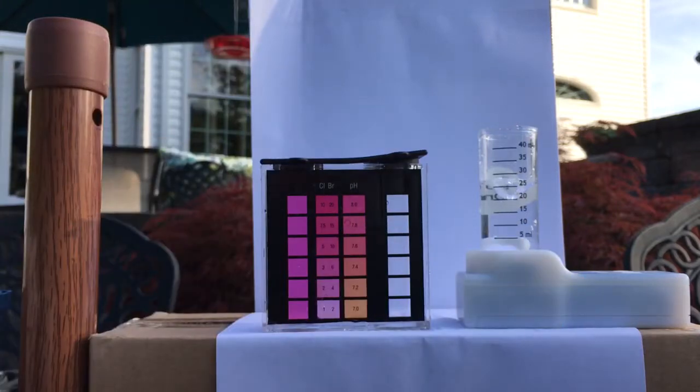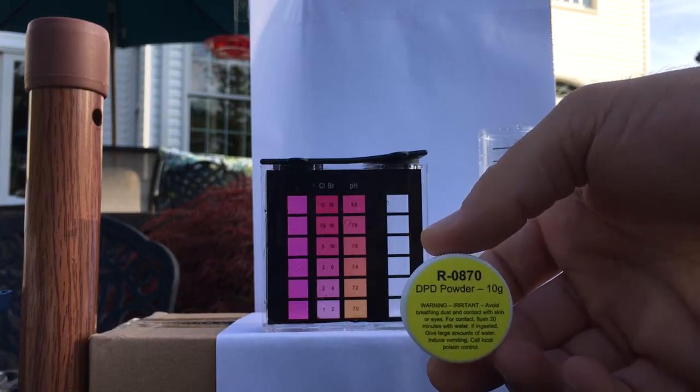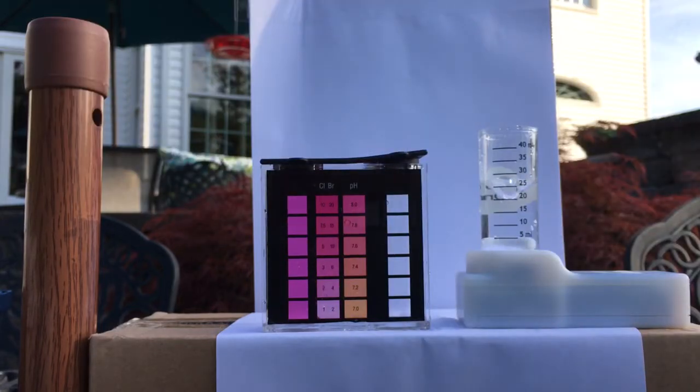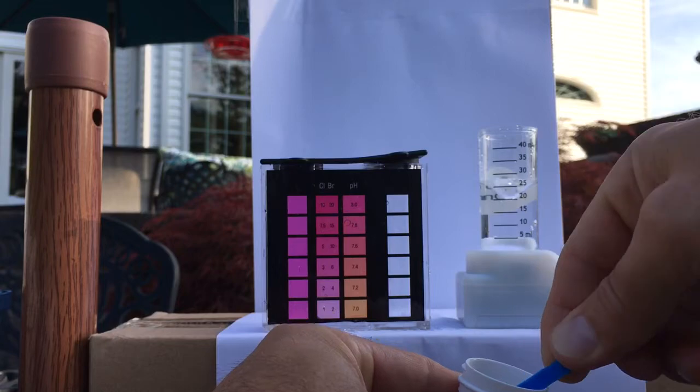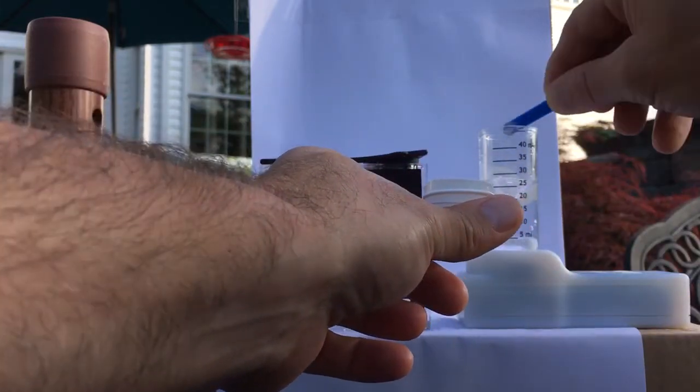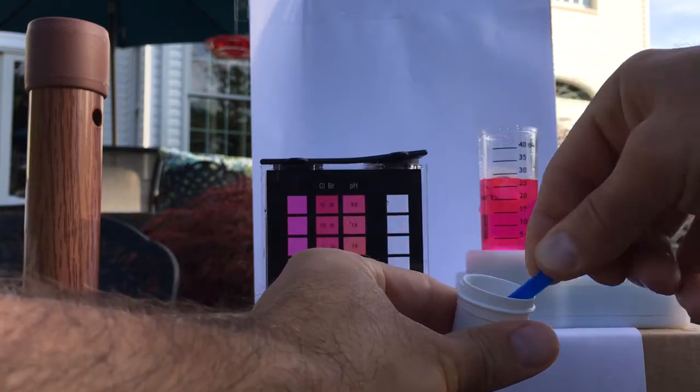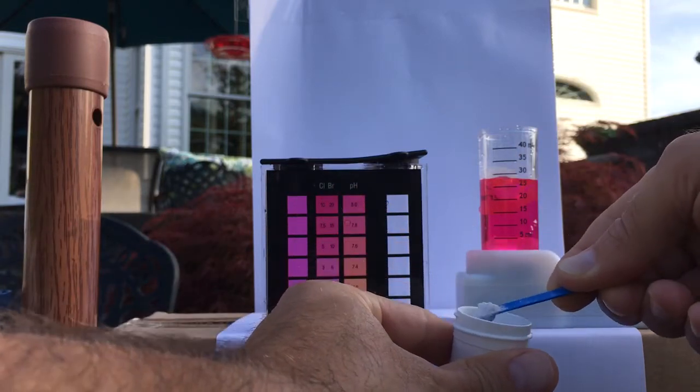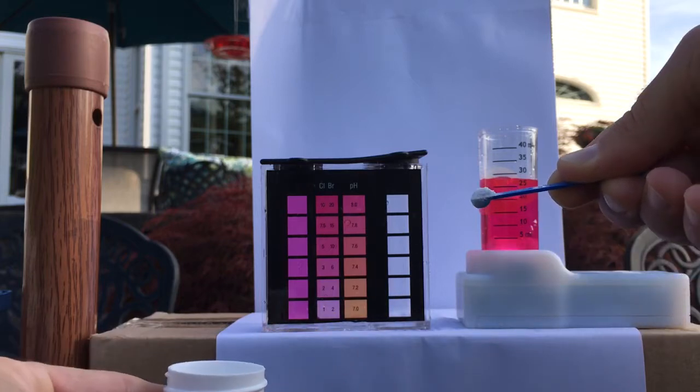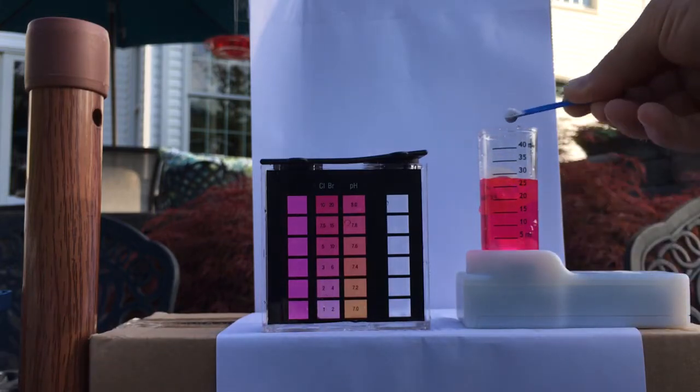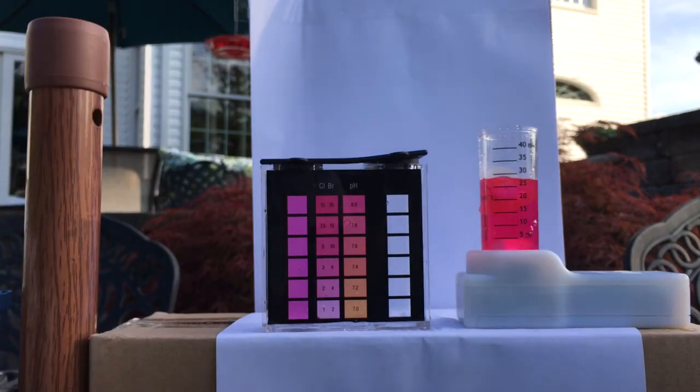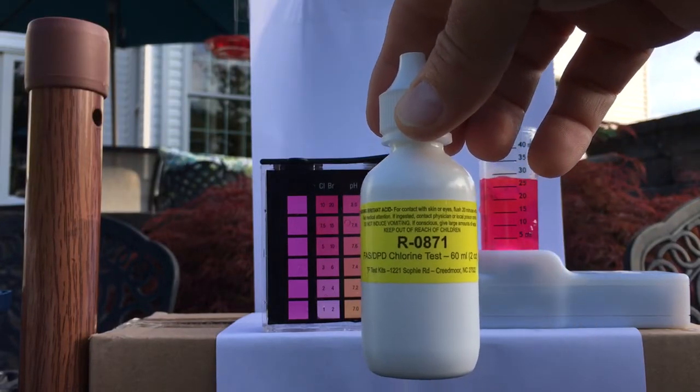Now next what I'm adding is the indicator powder, which is the R08770. We add two scoops of this. They say two heaping scoops. That's what I'm considering a heaping scoop right there. Two. It shows pink, which means chlorine is present. Next we'll add the titrating reagent, which is the R08771, and we count the drops. Then there's a formula to figure out the free chlorine in parts per million.